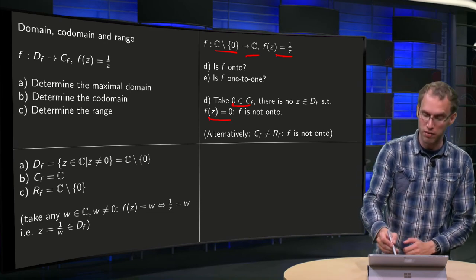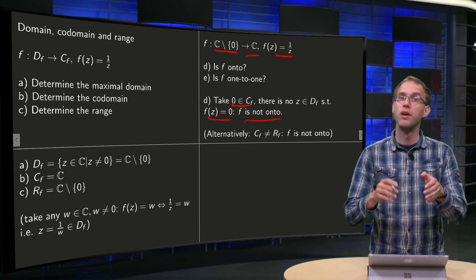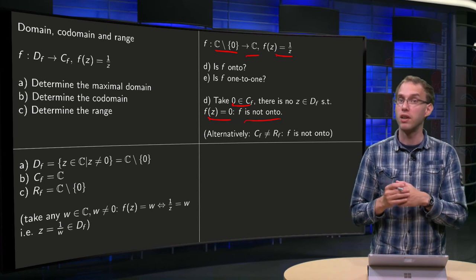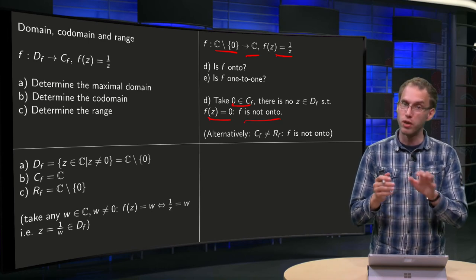Which means that the function f is not onto. For the function to be onto, you have to be able to reach any value in the codomain, and now we cannot reach 0, which means that we are not onto.